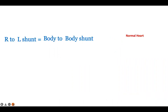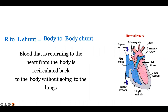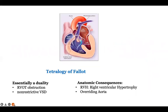Tetralogy of Fallot is a cyanotic heart disease causing a right to left shunt, which essentially means it is a body to body shunt. The blood returning to the right side of the heart, instead of going to the lungs to get oxygenated, goes back to the body through the aorta — that is why you have a right to left shunt.